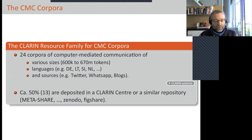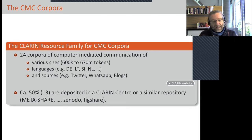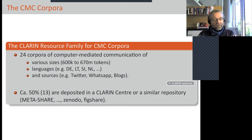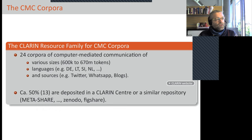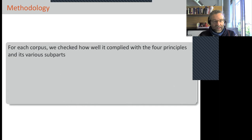About half of the corpora were in a CLARIN center or similar repository, and the other half weren't. The deposited corpora were not only in CLARIN but also in META-SHARE, Zenodo — which is connected to CERN, the particle accelerator research facility that participates in a European project making their infrastructure available to other researchers — and Figshare, an American-based platform also in the game for depositing data.